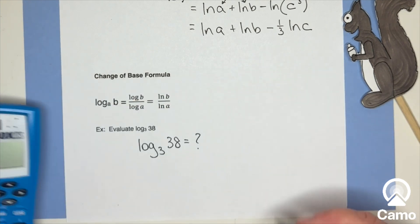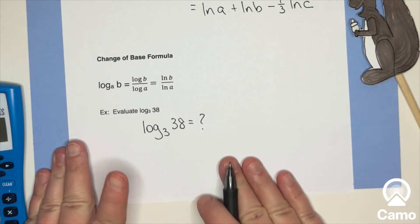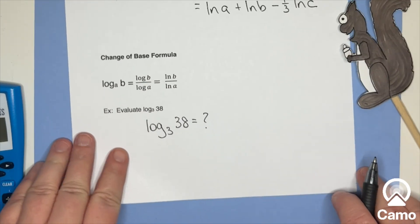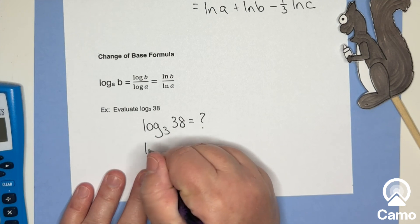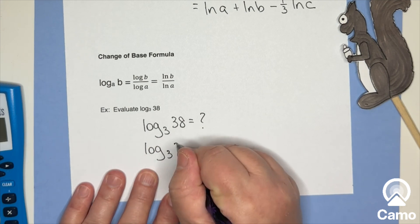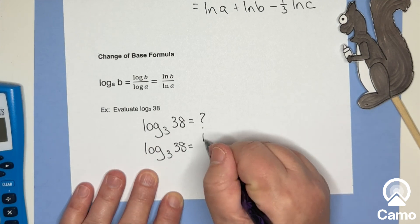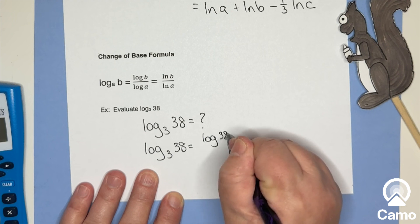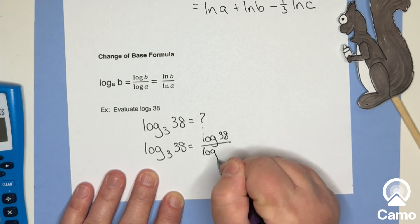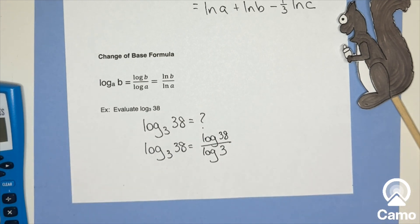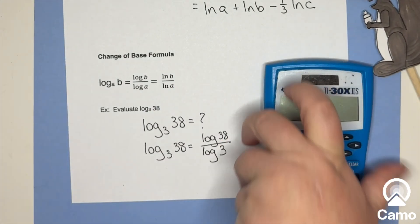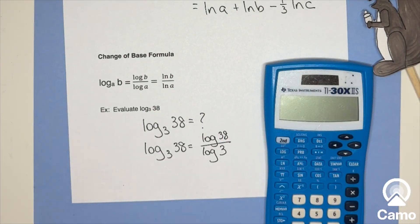I do not have a log base three on my calculator, but I could choose common log or natural log. And so I could say, oh, change of base. Log base three of 38 is common log of 38 all over common log of three. Okay. Let's calculate that. Now on this particular calculator, it can be tricky.